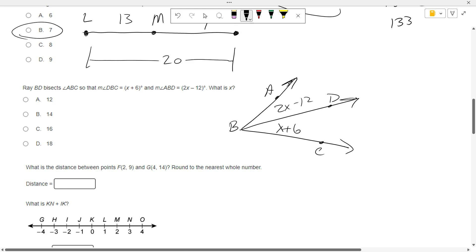So if it's a bisector, it splits the angle into two equal angles. These are two equal angles. What do I do with this and this? Set them equal each other. 2X minus 12 equals X plus 6. Subtract X from each side. X minus 12 equals 6. Add 12. X equals 18.